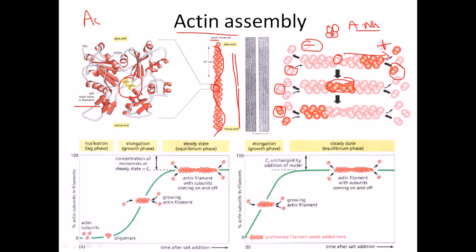So a nucleus is formed, and then attachment and detachment are ongoing. In the first step, further rounds of actin come in and bind with each other, so new actins bind and what was in the middle moves further along. After more actin addition, this portion shifts further, and these become the new actins on the positive side — what started here moves to this new position.